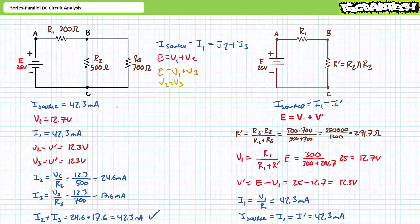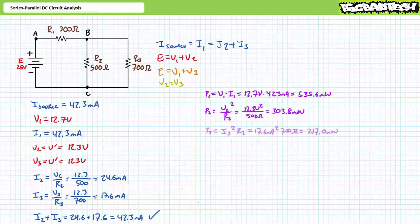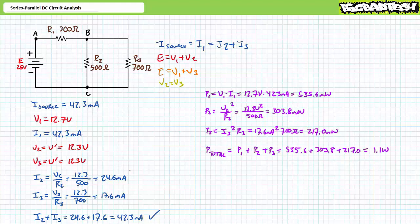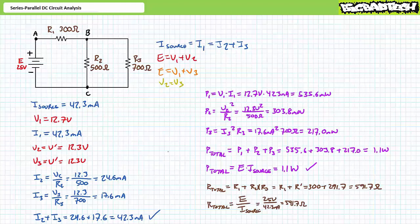Given these values, all we need to do now is solve for power. P1 equals V1 times I1 — substituting our calculated values demonstrates R1 dissipates 535.6 milliwatts. P2 equals V2 squared over R2 — R2 dissipates 303.8 milliwatts. P3 equals I3 squared times R3 — R3 dissipates 217 milliwatts. Total power equals P1 plus P2 plus P3, yielding 1.1 watts. As a means of checking our work, total power also equals supply voltage times source current, which similarly yields 1.1 watts. If you calculate total resistance by taking R1 in series with the parallel combination of R2 and R3, total resistance is roughly 591.7 ohms — confirmed by Ohm's law as well.